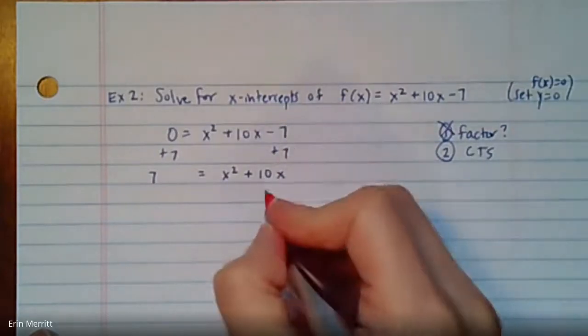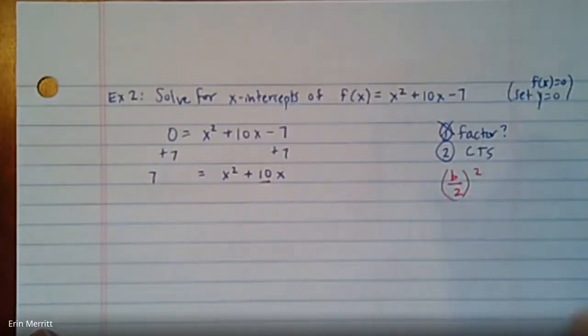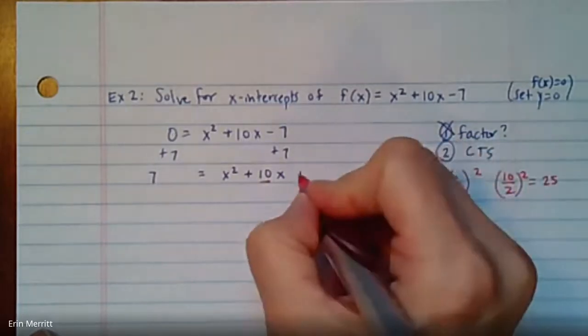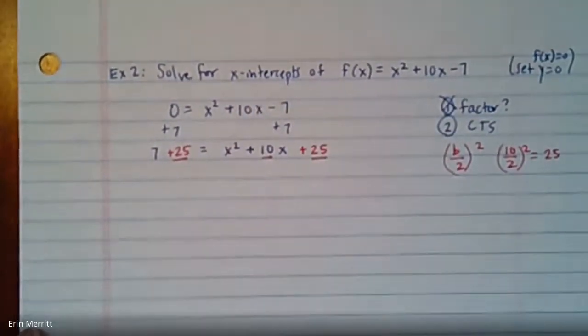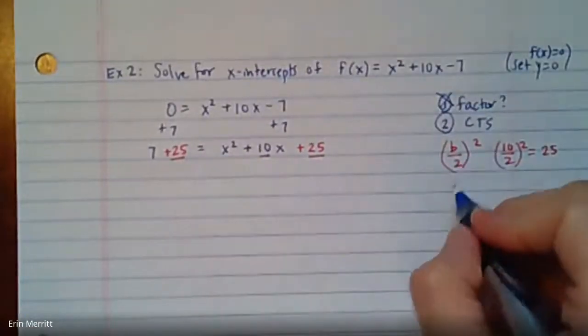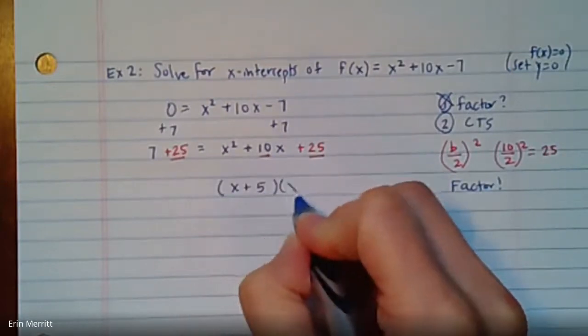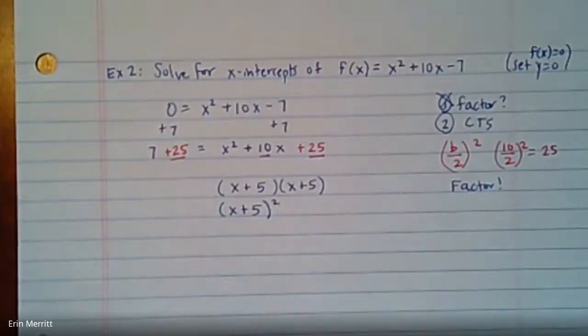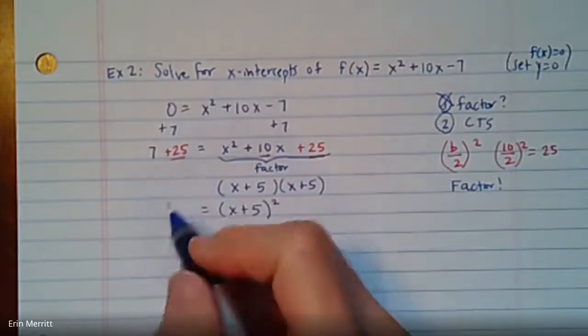To complete the square, get the x terms by themselves. Add the 7 on over to the other side so that you get 7 equals x squared plus 10x. The completing the square step: the term in front of the x, that's the b term. Take b, divide it by 2 and square it. That's what you're adding to both sides. In this case we take 10, cut it in half and square it. That'll be 5 squared or 25. Add 25 right here and then always to balance it, add 25 on the other side there. This is now factorable.